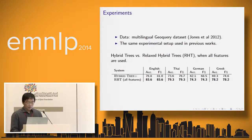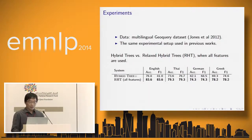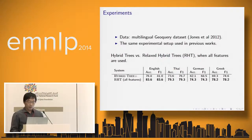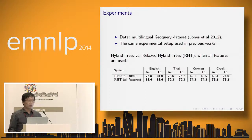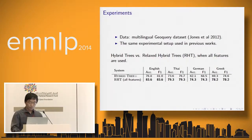We conducted experiments on the standard multilingual GeoQuery dataset released by Jones in their EMNLP 2012 paper. The dataset consists of four different languages: English, Thai, German, and Greek. We follow the same experimental setup as previous works to ensure our results are directly comparable. First we compare our work with the hybrid tree, which is a generative model augmented with a re-ranking phase where global features can be introduced. Even so, our system performs better than the hybrid tree model when all features are used.